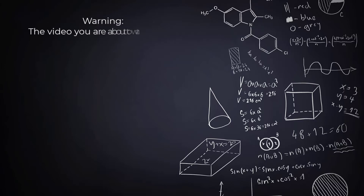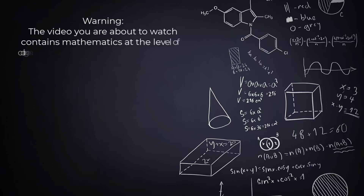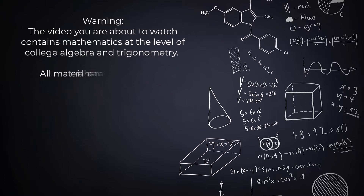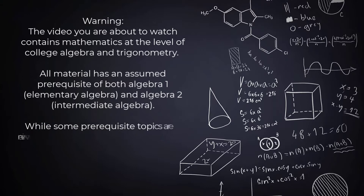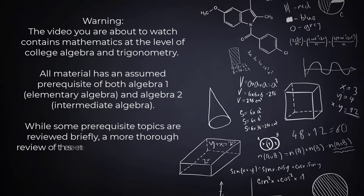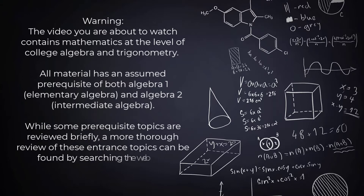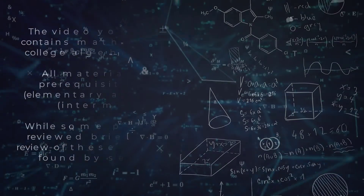Warning! The video you're about to watch contains mathematics at the level of college algebra and trigonometry. All material has an assumed prerequisite of both Algebra 1, which is Elementary Algebra, and Algebra 2, which is Intermediate Algebra. While some prerequisite topics are reviewed briefly, a more thorough review of these entrance topics can be found by searching the web.